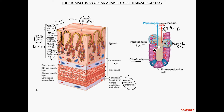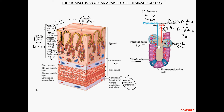Next to the parietal cells are chief cells. Chief cells secrete a substance called pepsinogen, which is an inactive enzyme — sometimes called a proenzyme. This inactive enzyme, pepsinogen, is converted in the presence of hydrochloric acid into pepsin. Pepsin is an active enzyme that begins the breakdown of proteins into larger polypeptides. This is the first chemical digestion happening in the stomach. So the key process is: pepsinogen, a proenzyme, is converted by hydrochloric acid into pepsin.